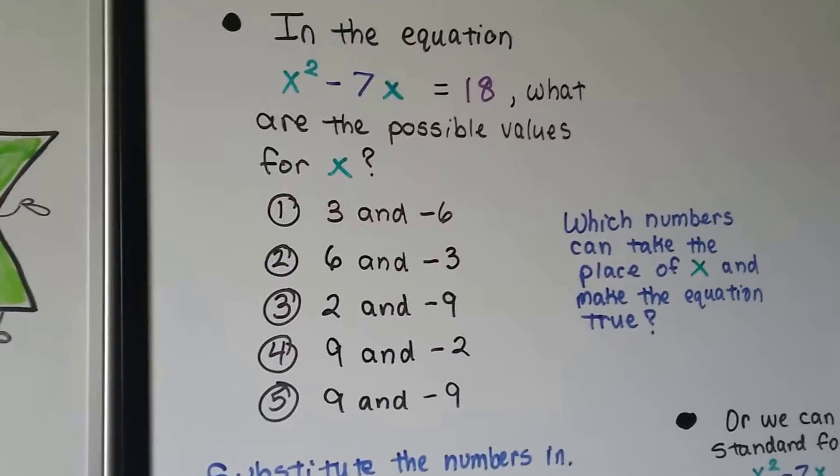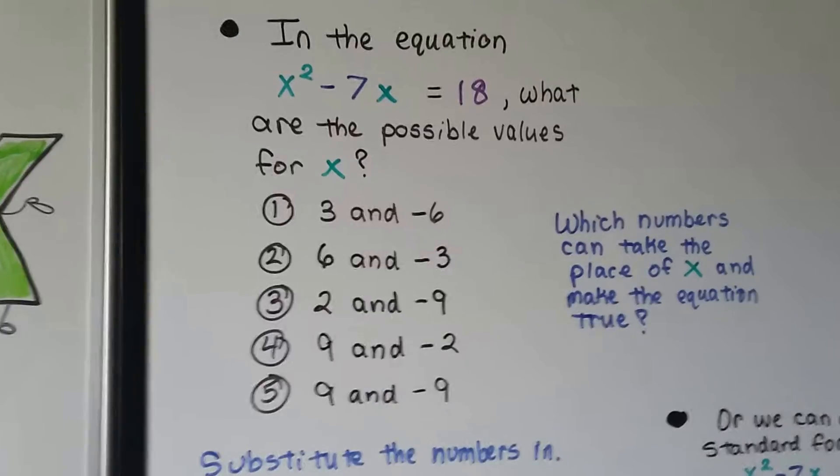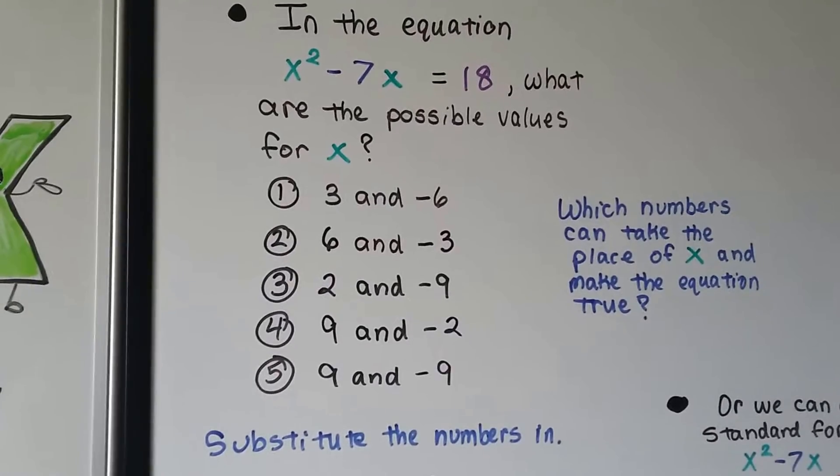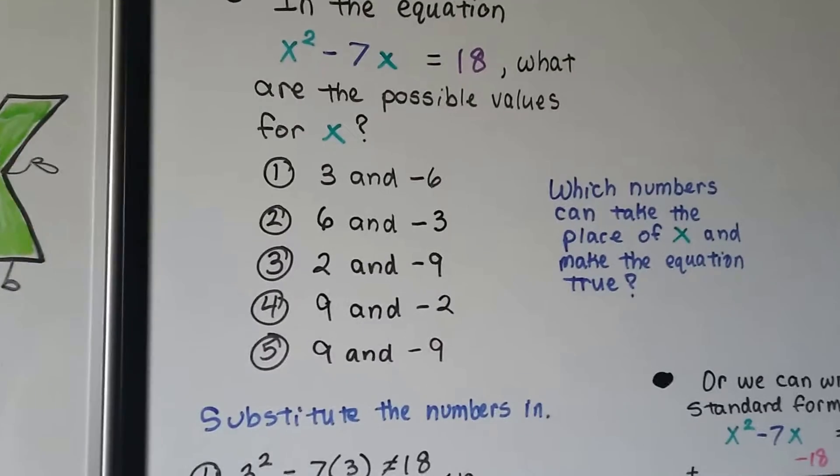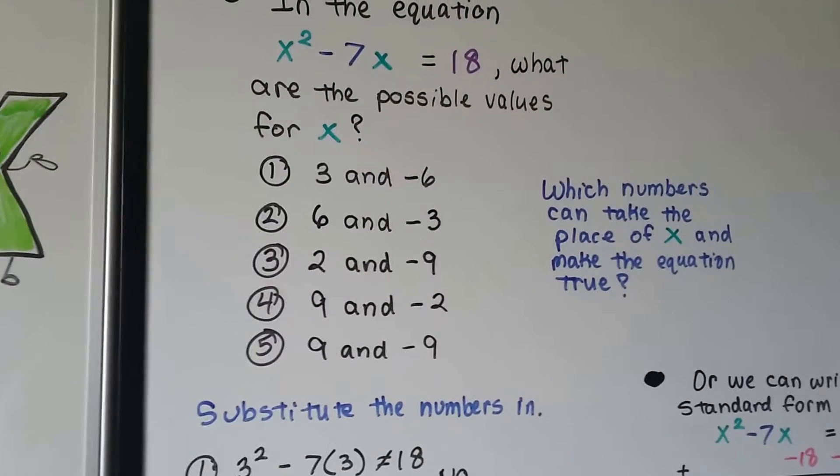Now, that was them just wanting the factors. In this one, it says, in the equation x squared minus 7x equals 18, what are the possible values for x? They don't want the factors. They want the actual possible values for x. Which numbers can take the place of x in this equation and make the equation true?